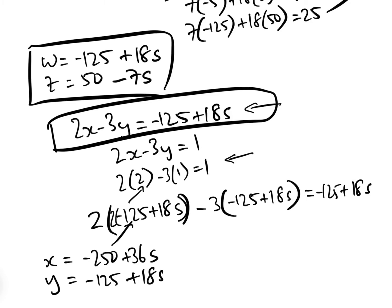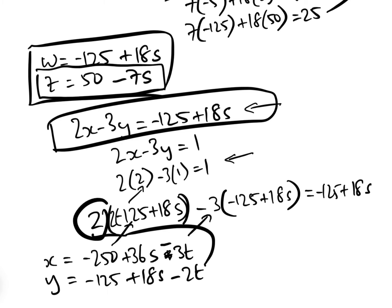That's the specific solution, so therefore the general solution would be x equals minus 250 plus 36S minus 3T, and this one here would be minus 2T. So we now have our general solution: z is 50 minus 7S, x is minus 250 plus 36S minus 3T, and y is minus 125 plus 18S minus 2T for any S and T contained in the integers. That is the solution to the Diophantine equation.